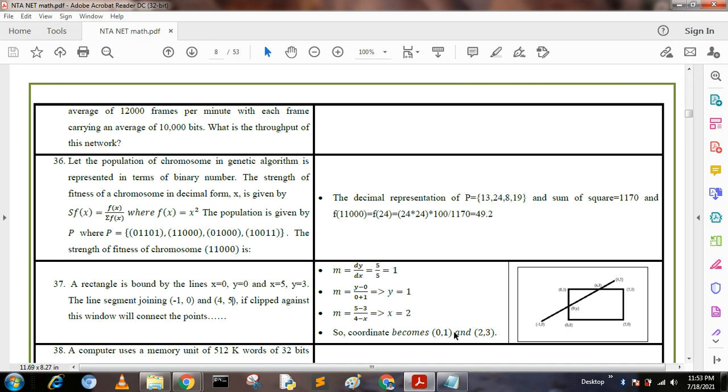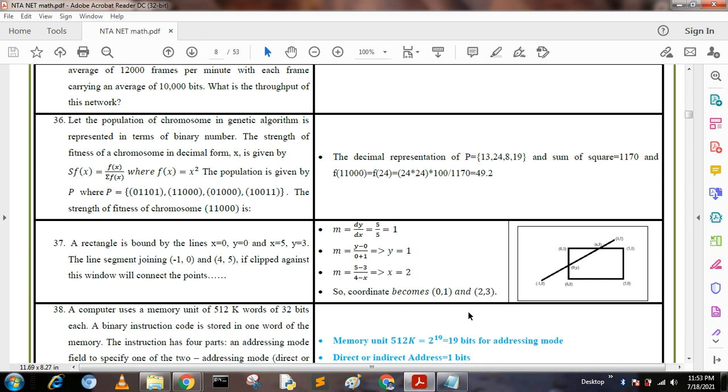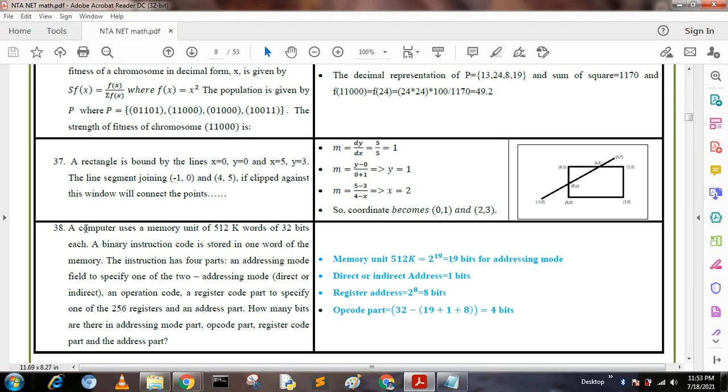Third question: A computer uses a memory unit of 512K words of 32 bits each. A binary instruction code is stored in one word of memory. The instruction has four parts: an addressing mode field to specify one of two addressing modes (direct or indirect), an operation code, a register code part to specify one of 256 registers, and an address part. How many bits are there in the addressing mode part, operation code part, and address part?